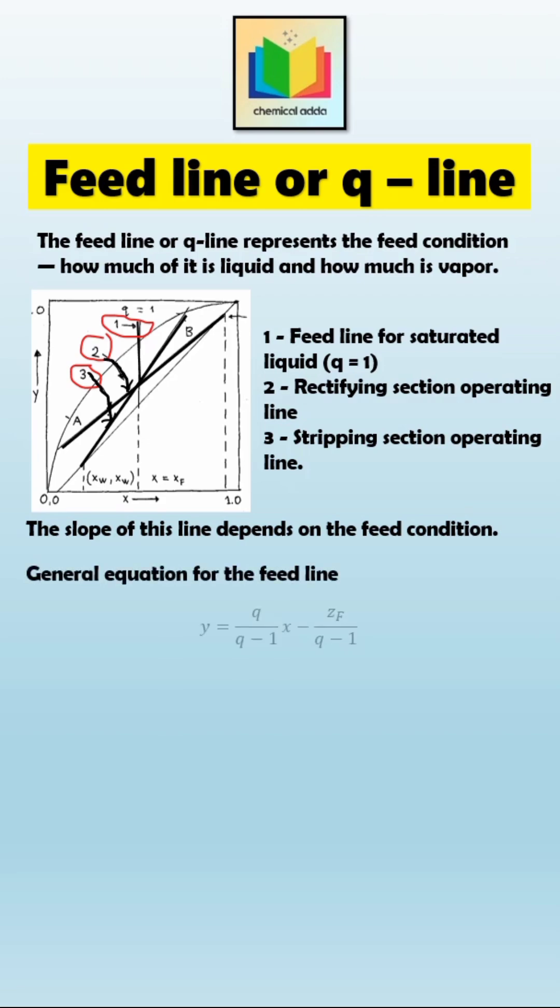The general equation for the feed line is y equals Q divided by Q minus 1 into X minus ZF divided by Q minus 1. And the slope of this feed line is Q divided by Q minus 1.